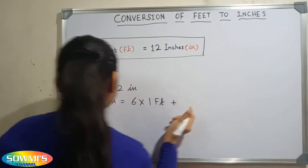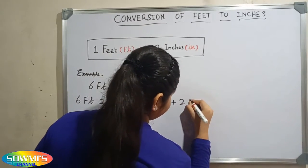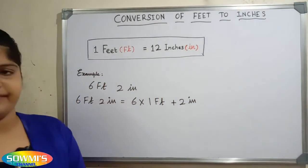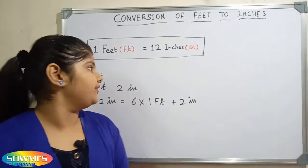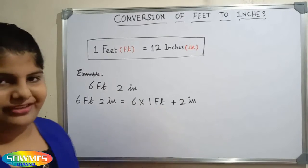6 feet 2 inches plus 2 inches. Now we have to substitute 12 inches in the place of 1 feet.